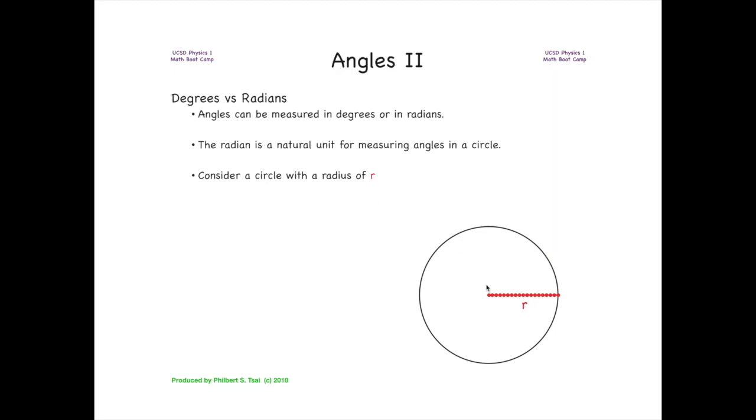Let's consider a circle with a radius of r, as shown in the figure here. If we take that length r and trace it along the arc of the circle's perimeter, then the angle that's swept out by that length r along the perimeter will end up giving you the angle of exactly one radian, where one radian is roughly 57.3 degrees.